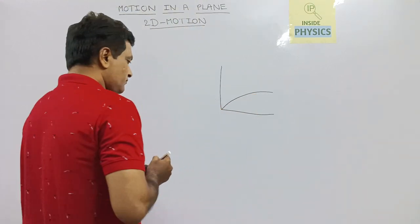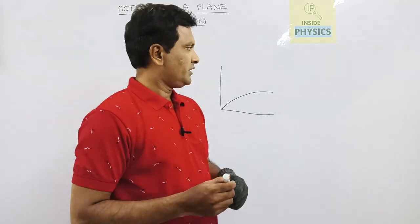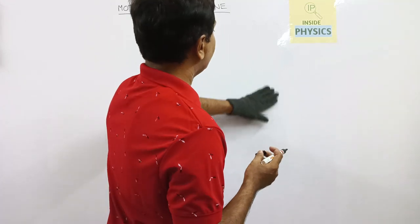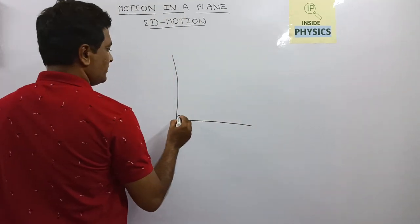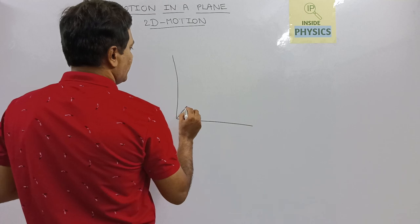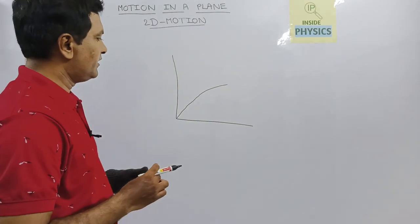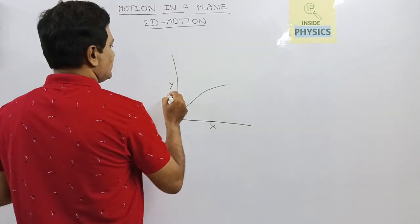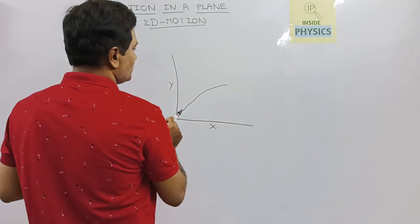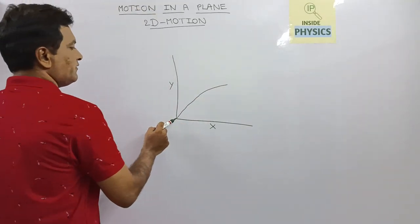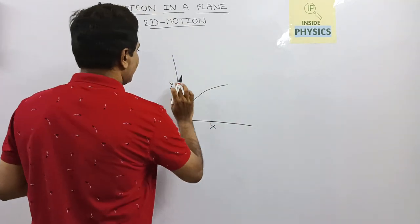For a projectile, there are two components of velocity in its motion. When it is a two dimensional motion, it is covering a horizontal as well as vertical displacement, then it is called a two dimensional motion. This is the x-axis, this is the y-axis, and an object is thrown at an angle and it is moving in this way, covering both the horizontal distance and the vertical distance.